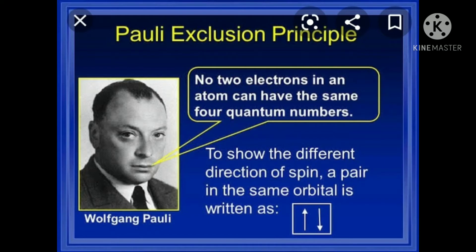For example, the electronic configuration of lithium is 1s² 2s¹. In the 1s orbital, which contains two electrons, their n value, l value, and m values are equal, but their spin values are different. The first electron has +1/2 spin value and the second electron has -1/2 spin value. So no two electrons in an atom can have the same set of four quantum numbers.